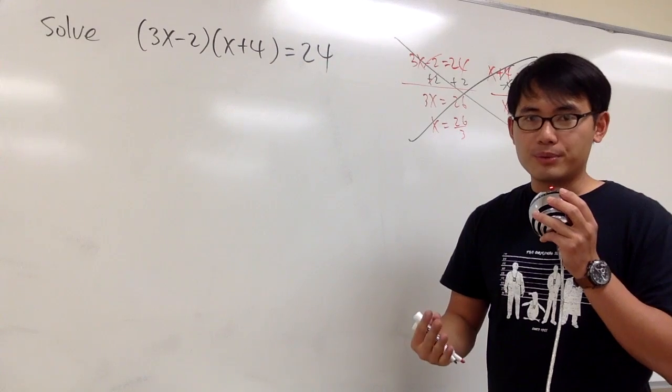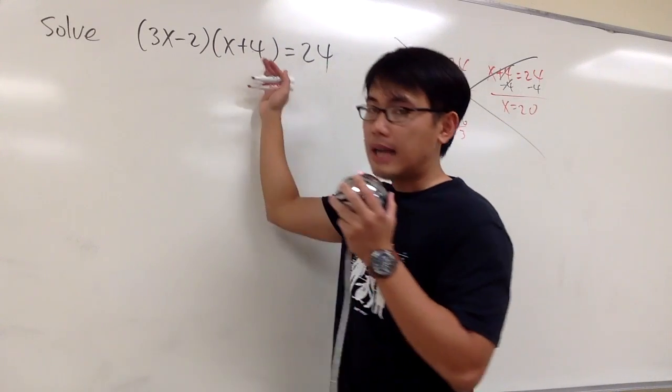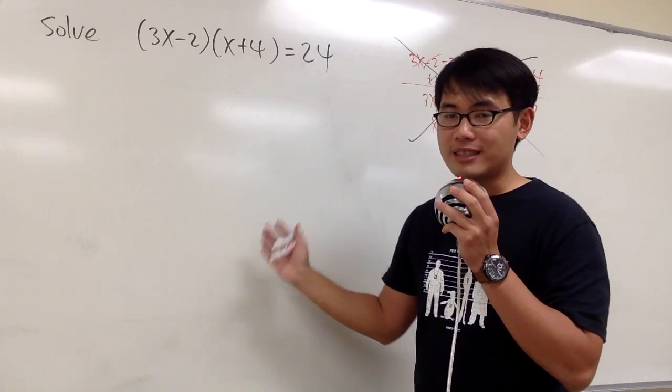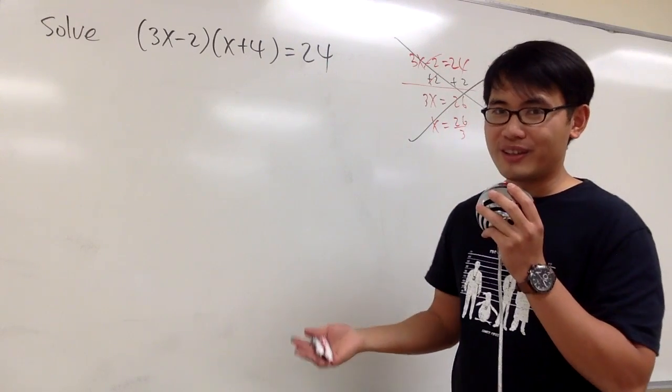So, this is what we have to do. We are going to first multiply this out, and then minus 24 on both sides, so we have 0 on the right side. And then factor it, and then we solve from there.